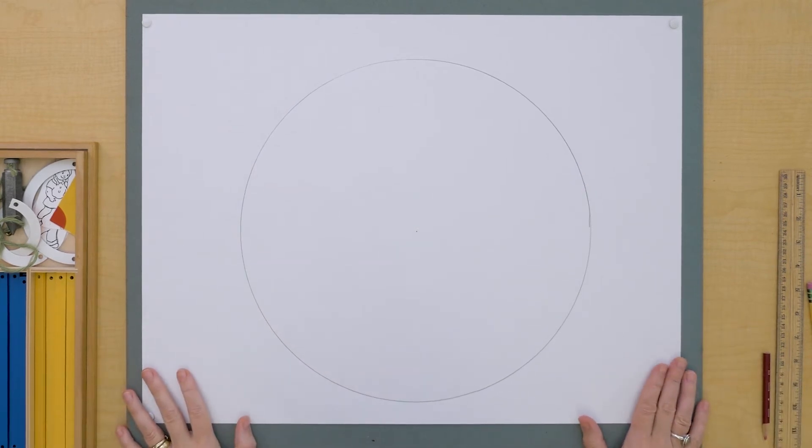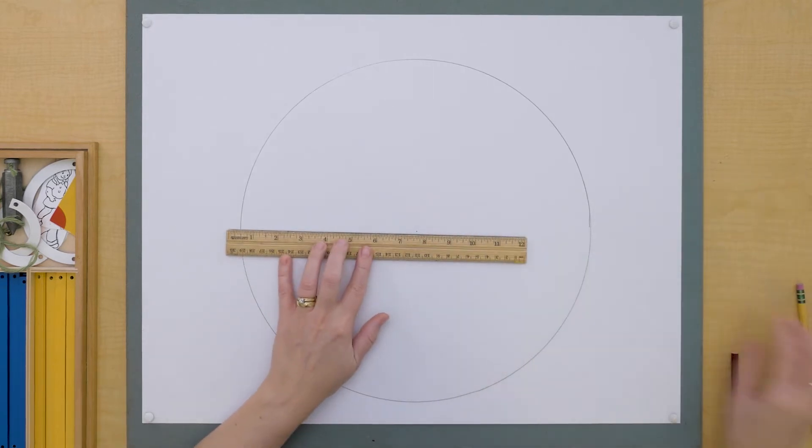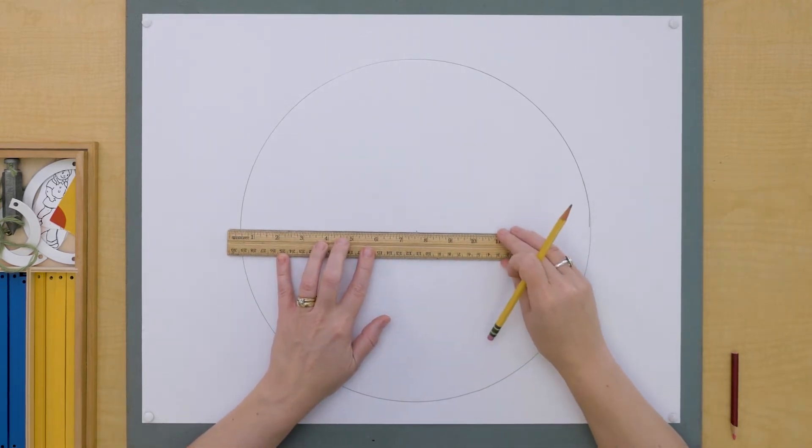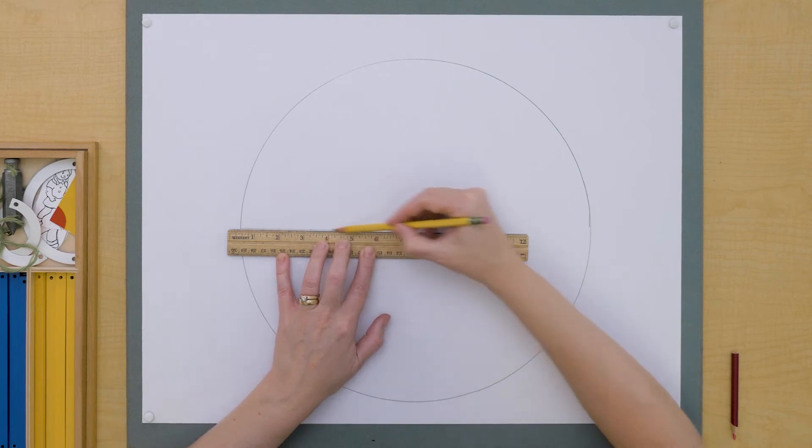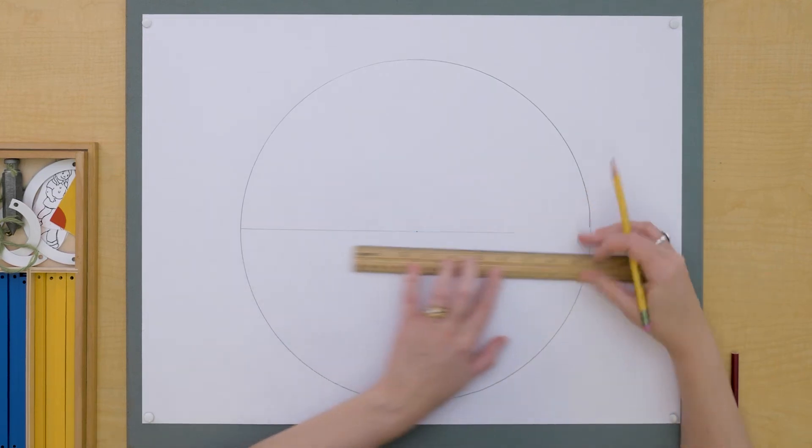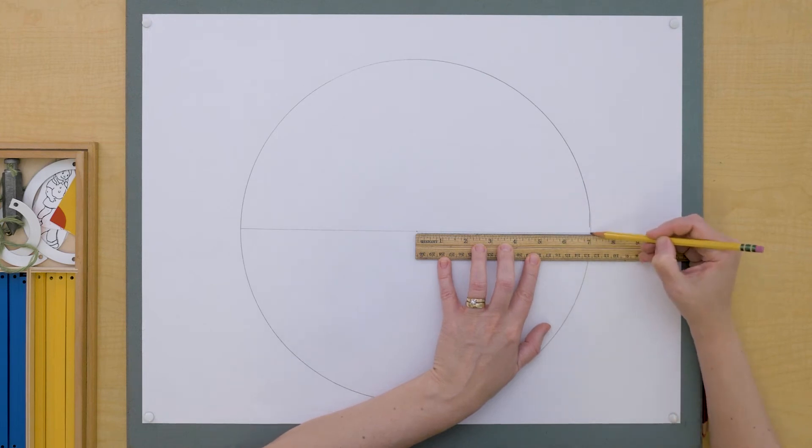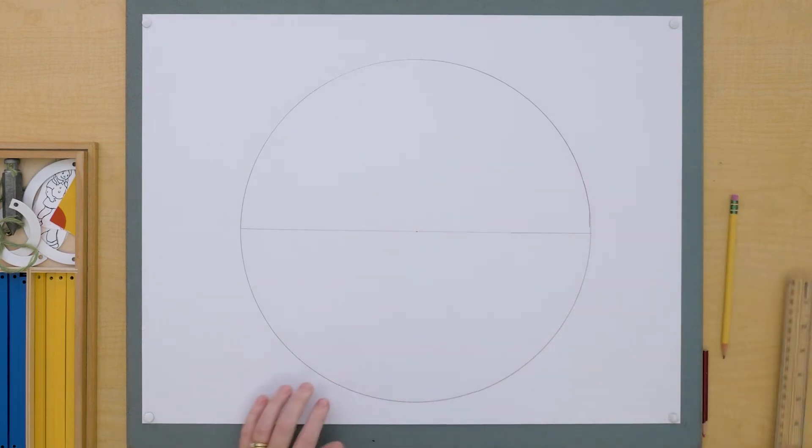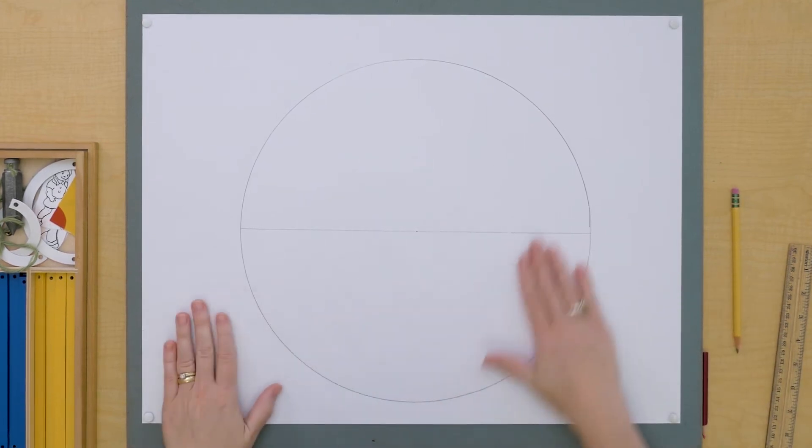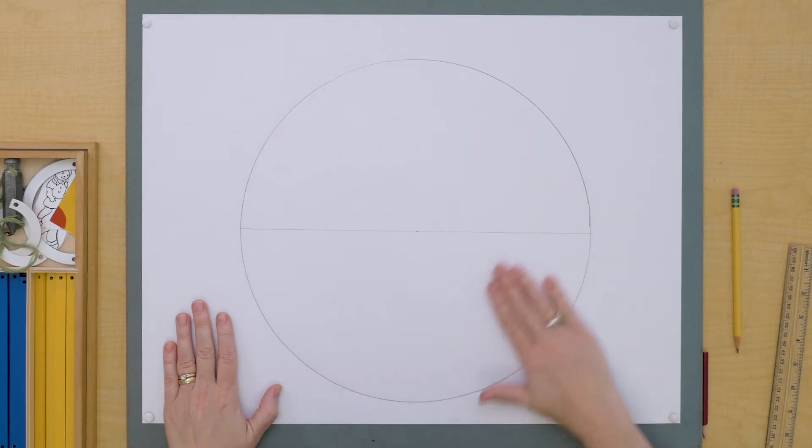So here's my circle. Do you remember this part of the circle, this diameter? Well, it really cuts this whole surface of the circle in half.